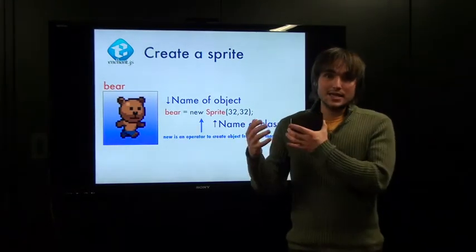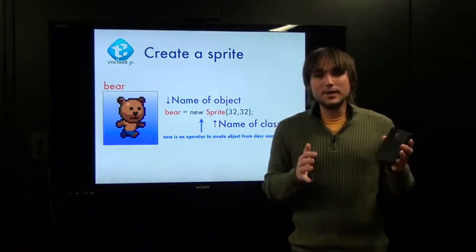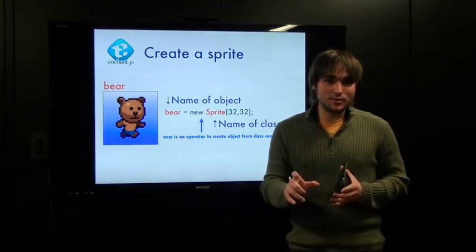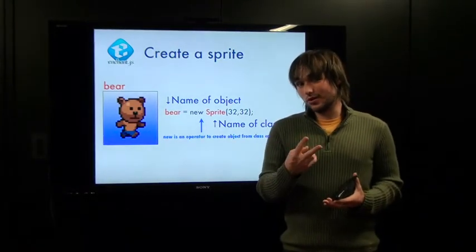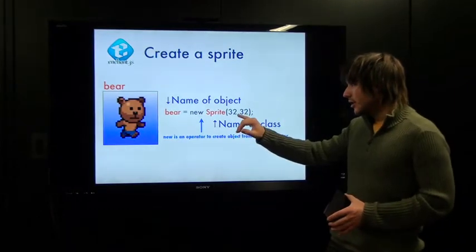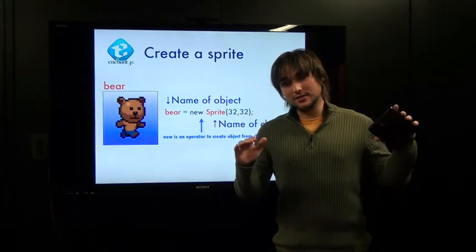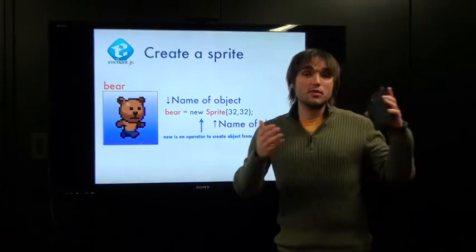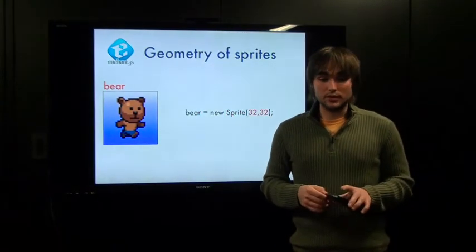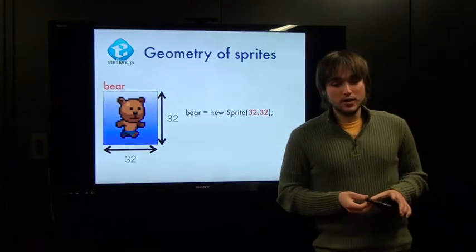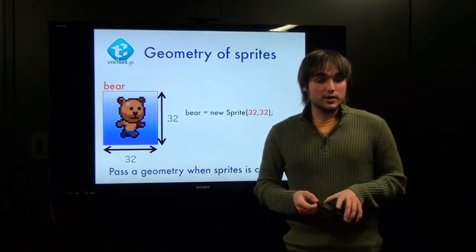Before, when we created a label, we would say this blank equals new label. And then we passed a single argument, a string, specifying what we wanted as the text of that label. But in sprites, the sprite class, when we create a new object, we need two arguments. And these arguments are specifically the dimensions. So, the first argument is the dimension in the x-axis, and the other one is the dimension in the y-axis. So, width by height. So, we're saying create a new sprite that is 32 pixels wide by 32 pixels tall. That's what it is. So basically we're passing the dimensions of the sprite when it is created.